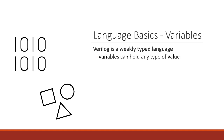A variable can switch to holding data of a different type during execution. You can define 32 bits and make it hold an integer at the start, and then suddenly, later during your execution, you can switch to make it hold 4 characters instead. We'll get into Verilog's perspective on why this is the case later.